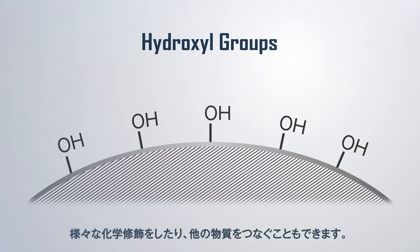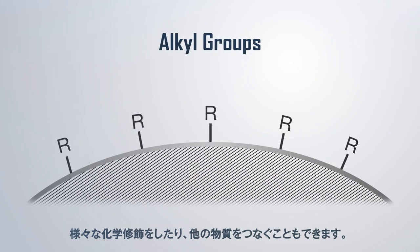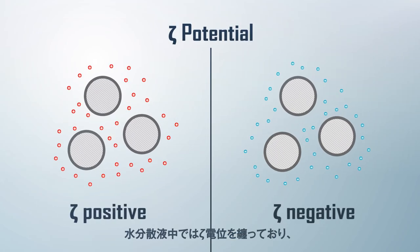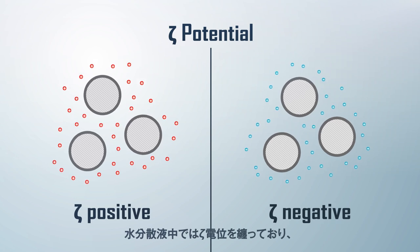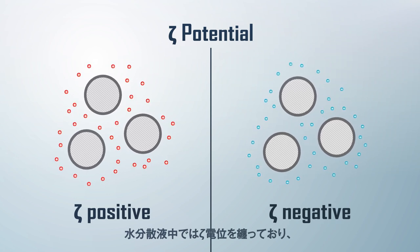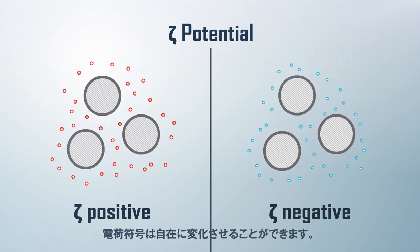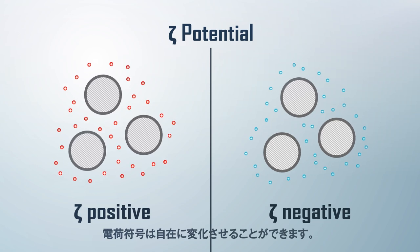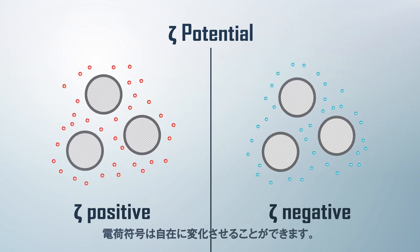They can be chemically modified in various ways or bonded with other materials. In aqueous dispersions, they carry a zeta potential and can be freely changed to either positively or negatively charged.